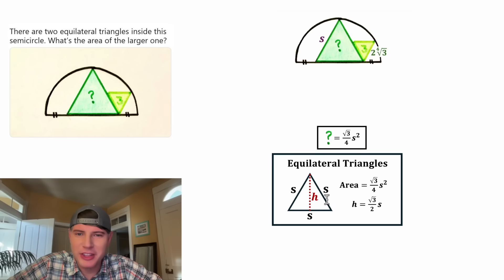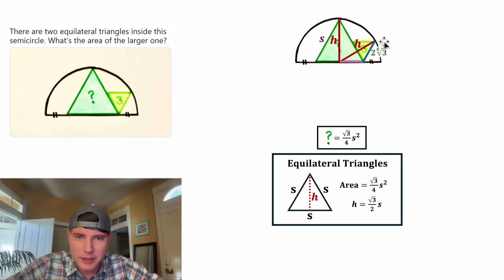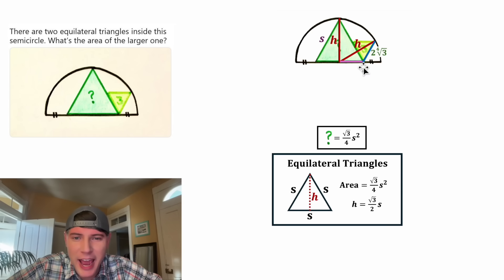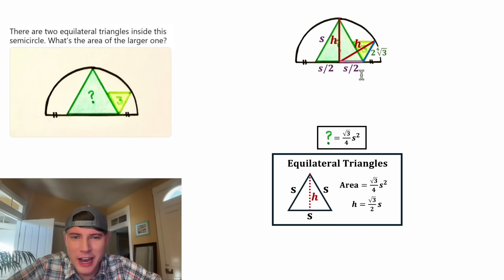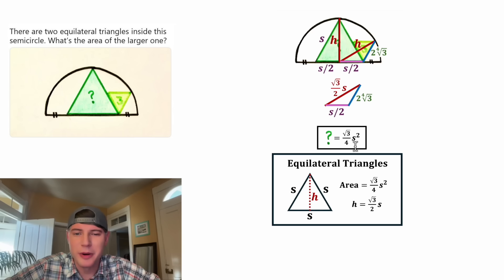From here, let's do something with the height. Let's construct the height of the larger triangle and label it H — this height is also a radius of the semicircle. Let's draw another radius of the semicircle, which also has length H. Then let's draw two segments to form a small triangle. The base of this new triangle is exactly half a side length of the green equilateral triangle, so each of those is S over two. This H can be rewritten as root three over two times S, expressing everything in terms of S.